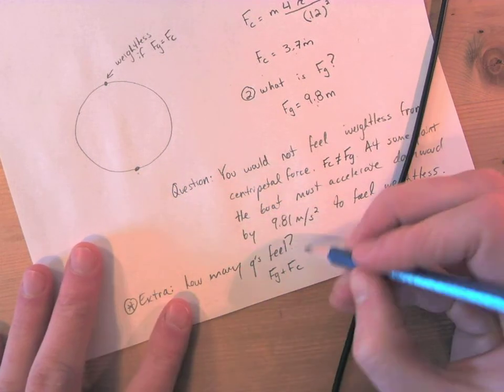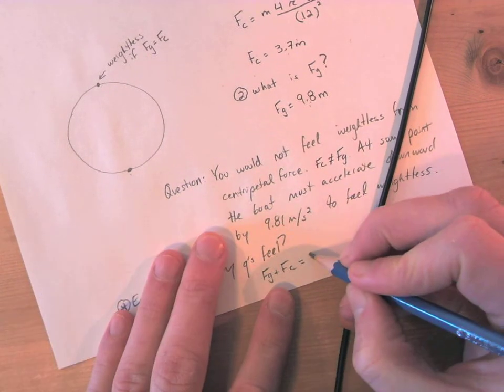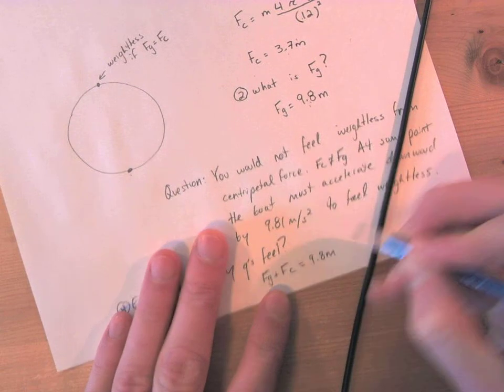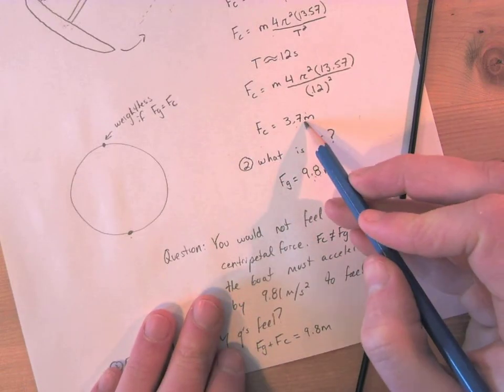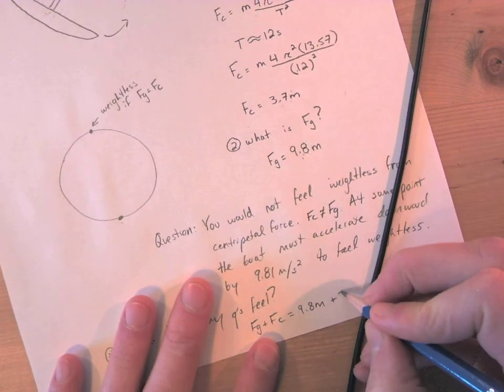So here we can go FG plus FC is going to be 9.8m, and then FC we found to be 3.7 if it was constant throughout.